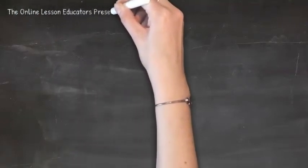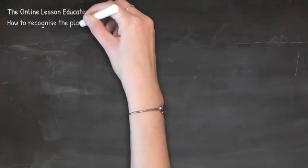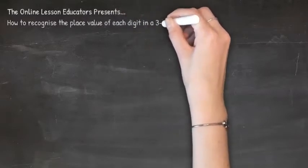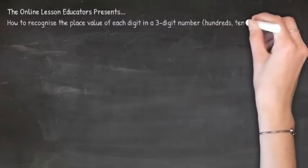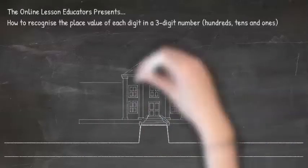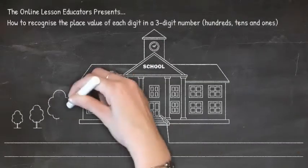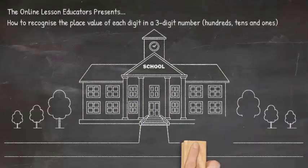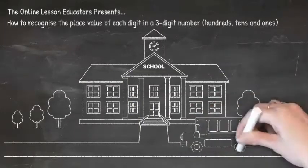Hello and welcome to the Online Lesson Educators. Today we will be learning how to recognize the place value of each digit in a three-digit number. We will be using hundreds, tens, and ones. So let's get learning.